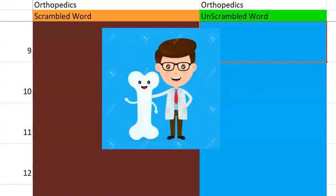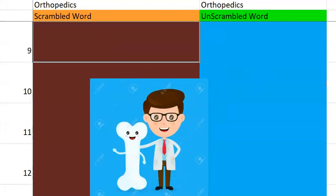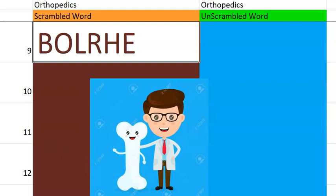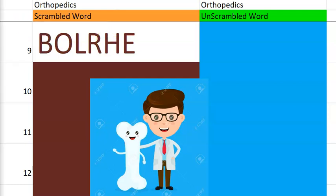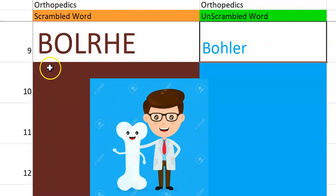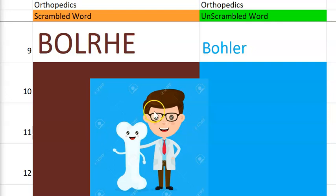Let's go to the next one. What do you think this one is? This is beginning with a B, and actually there are two words to it. It's basically the name of a splint. Bohler-Braun splint. It is a common splint used for immobilization of the lower limb. Bohler-Braun splint.